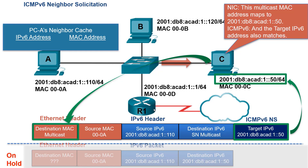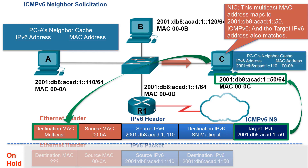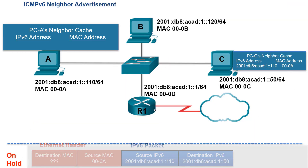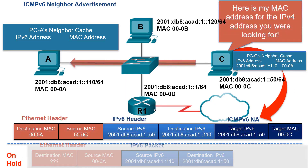Before replying, Host C adds the IPv6 and MAC address of Host A to its own Neighbor Cache. Host C then replies with an ICMPv6 Neighbor Advertisement Message sent as an Ethernet unicast message directly to Host A. The ICMPv6 header includes Host C's IPv6 address, which Host A already knew, and the associated MAC address that Host A was requesting.